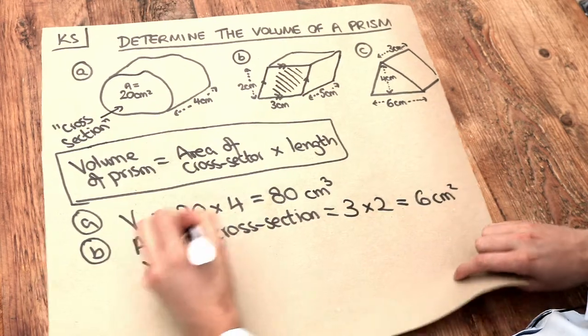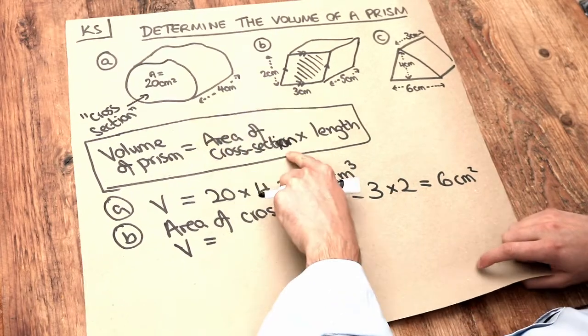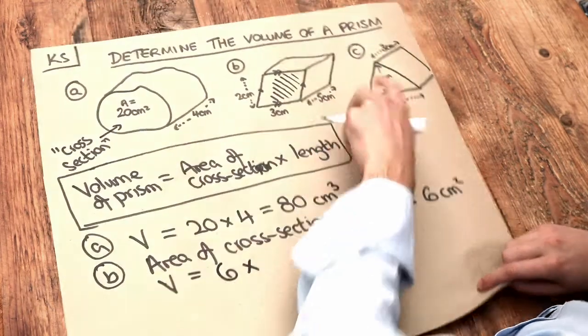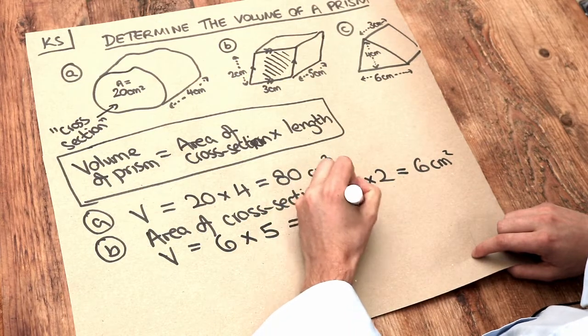And that means the volume of the prism is just the area of the cross section, not cross sector, sorry, which is 6 multiplied by the length which is 5 and that gives us 30 centimetres cubed.